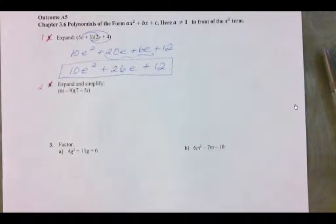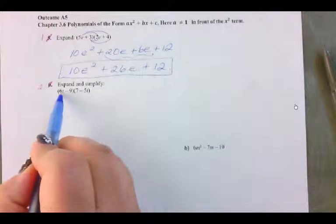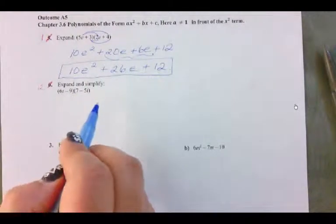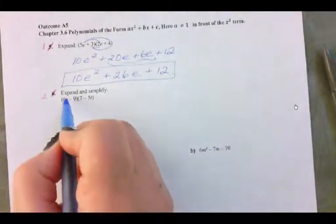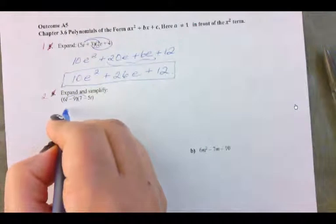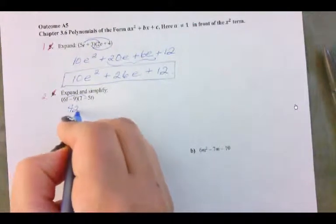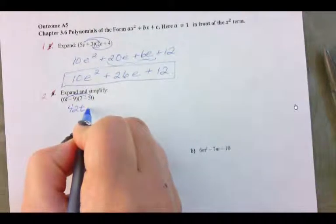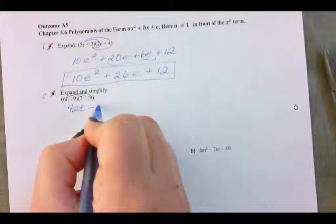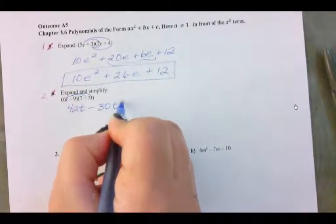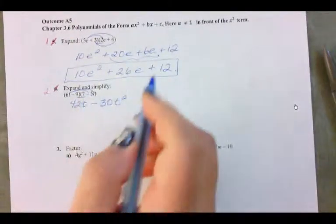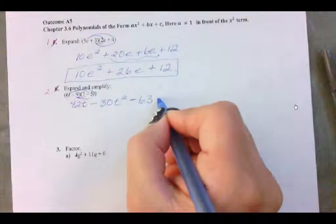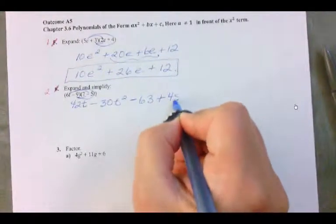Now let's look at the next question. Notice that we've got the t in the front here and over here. We're just going to multiply it through, expanded exactly as we see it, using the same rules of distributive property. So 6t times 7 is 42t, and 6t times negative 5t is minus 30t squared. Then negative 9 times 7 is negative 63, and negative 9 times negative 5t is positive 45t.